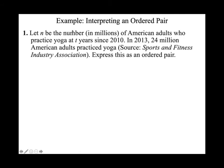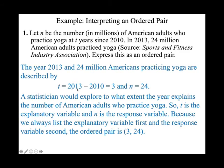Since T is years since 2010, at 2010 T equals 0. In 2013, T equals 2013 minus 2010, which is 3. And N equals 24 million. Written as an ordered pair: (3, 24), where 3 represents T years and 24 represents 24 million American adults who practiced yoga.